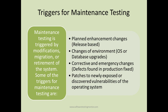A second trigger is changes of environment. For example, if a production environment runs on Windows OS with DB2 as the database, and new versions of both become available, the organization may want to upgrade. In that case, the software must be tested to run on the new OS and database versions, requiring maintenance testing.